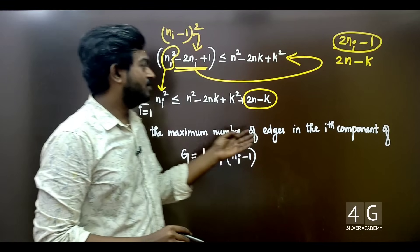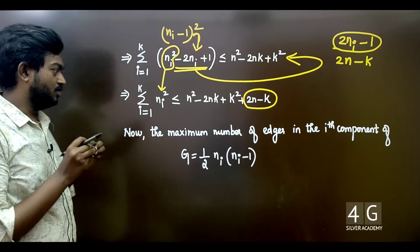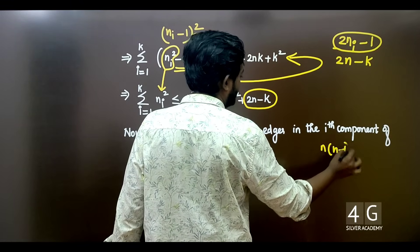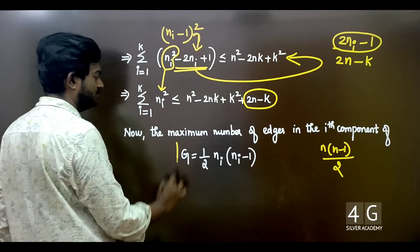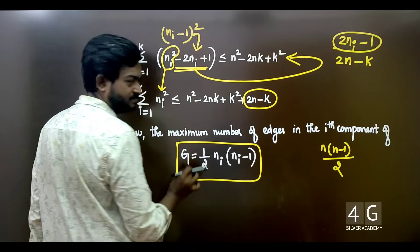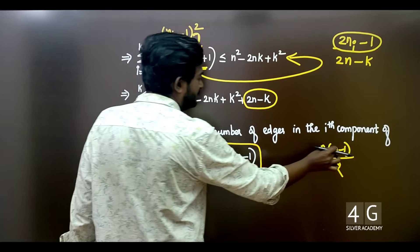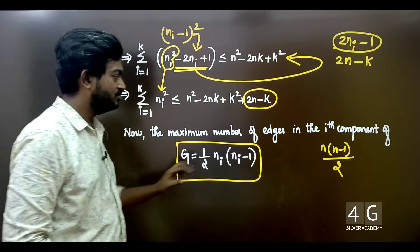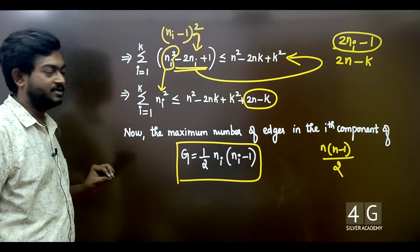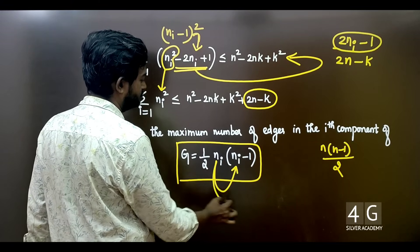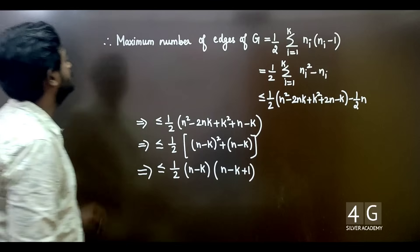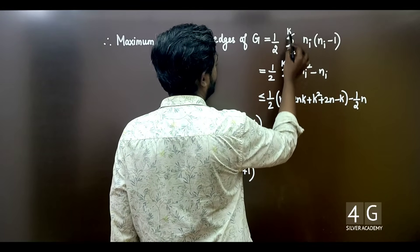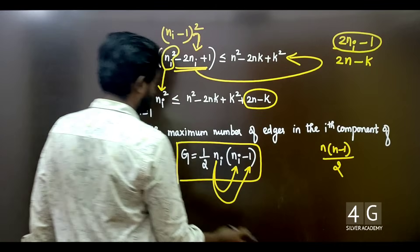Now the maximum number of edges in the i-th component — from previous theorems in graph theory — is ni(ni-1)/2. So the maximum number of edges of the whole graph is: 1/2 times summation from i=1 to k of ni(ni-1), which equals 1/2 times summation of (ni² minus ni).